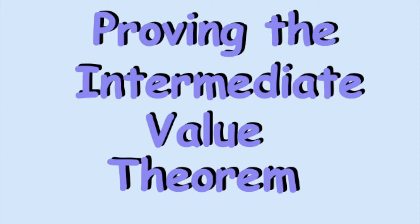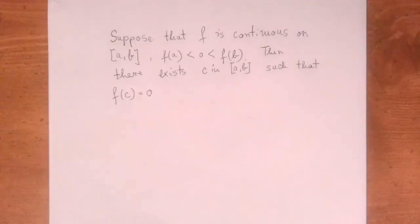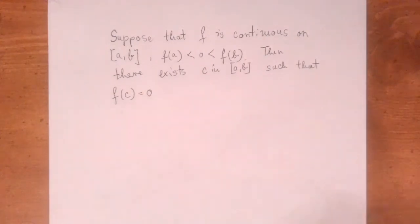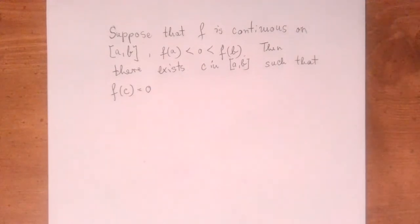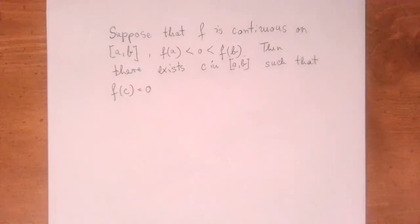We're going to prove the Intermediate Value Theorem, which states the following. Suppose that we have a function f that is continuous on a closed interval a, b. Further, suppose that f of a is negative and f of b is positive. Then there exists a number c within the interval a, b such that f of c is 0. In other words, if you have a function that's continuous on a closed interval, there is always a zero somewhere between a negative and a positive function value.